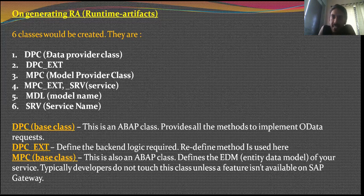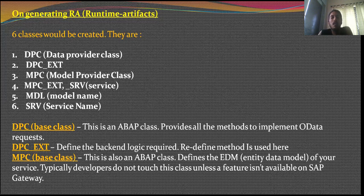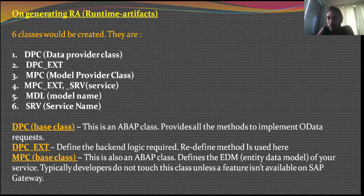The six classes are: DPC, which is the Data Provider Class — a base class; an extension class of it; MPC, which is the Model Provider Class, along with another extension class; a service folder with underscore SRV; and the model with underscore MDL. These are the six classes you find when you generate runtime artifacts. Now, what do they do and what is their role in the project?